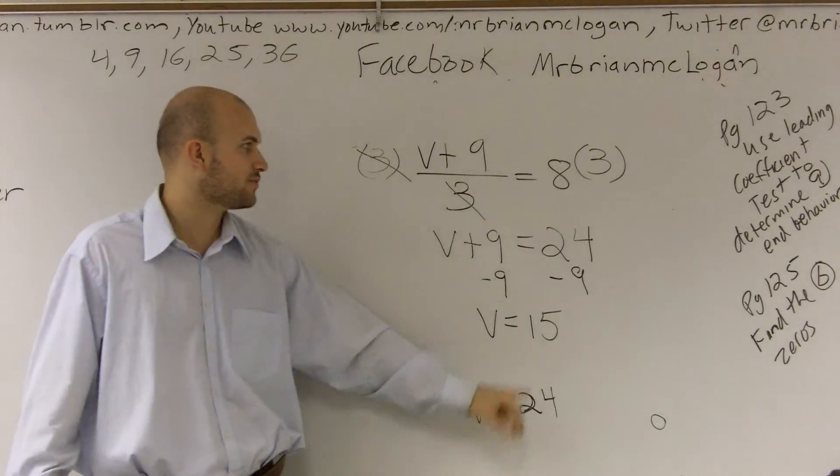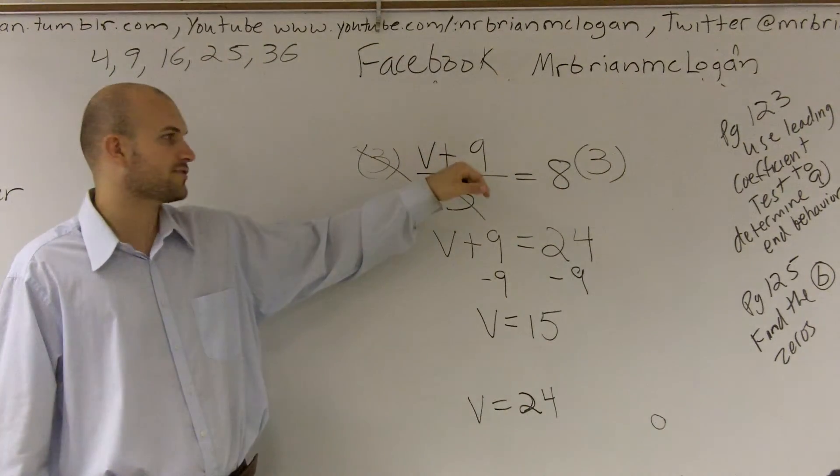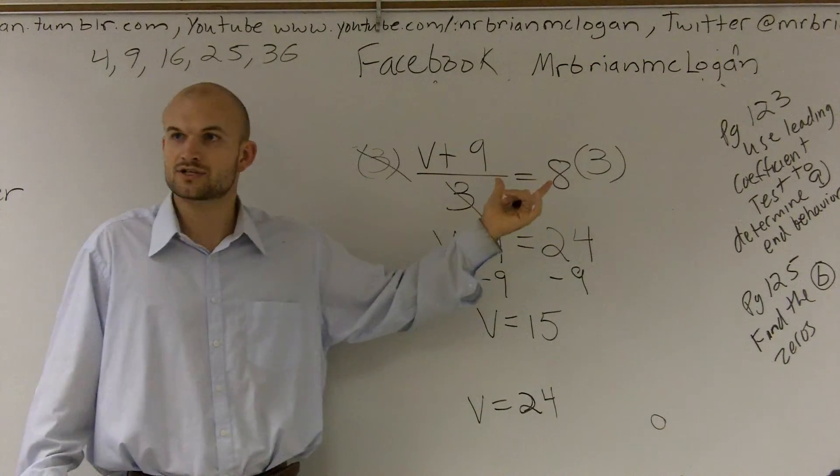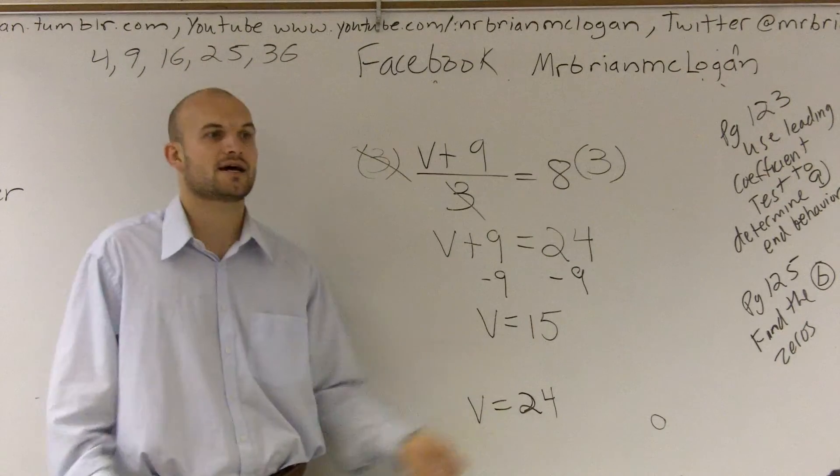So she could have checked her answer and said 24 plus 9, that's 33. 33 divided by 3, that's actually 11. And 11 doesn't equal 8. But that's a good way for you guys to see how the process works.